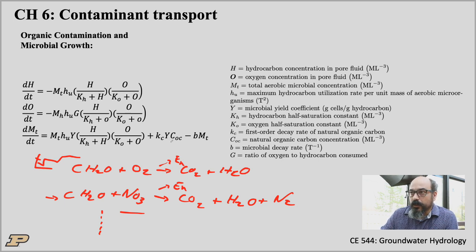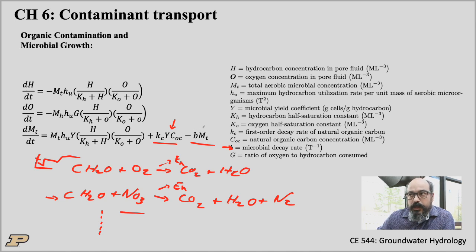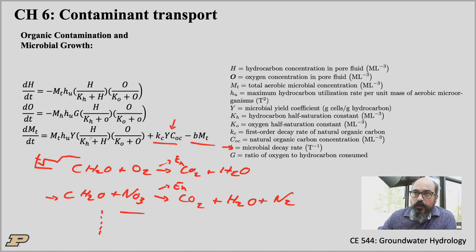Notice that you also have some first-order rates here. Looking at B — the decay rate — this is basically a death process. We're growing from the organic carbon in the formation with some yield, but we're also dying because cells have a life expectancy, so there's a constant death rate. This is a first-order process for death, a first-order process for growth depending on organic carbon in the aquifer, and monokinetics for both the hydrocarbon and oxygen, with the biomass depending on the hydrocarbon and oxygen as limiting substrates.